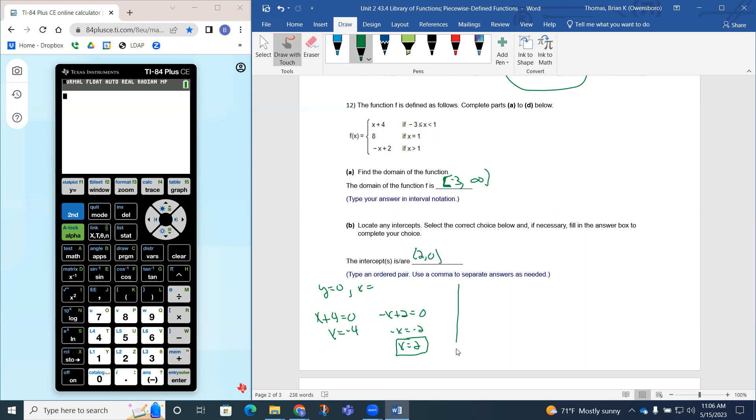To find the y-intercept, we have to set x equal to 0 and solve for y. If I set x plus 4 equal to y, if I replace x with 0, we get 0 plus 4 equals y. So y would equal 4. And notice that 0 does fit within this guy's domain. Notice that the other ones, you can't use x equals 0 because it does not fit within the domain intervals. So the y-intercept has to be 0, 4.